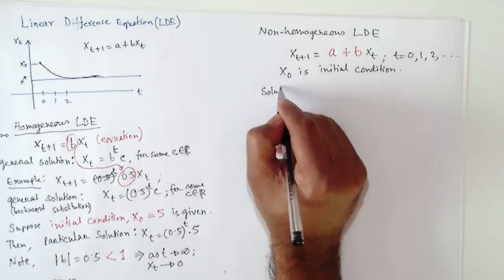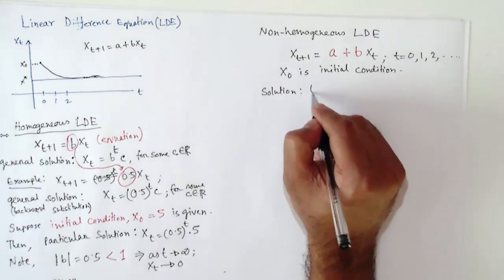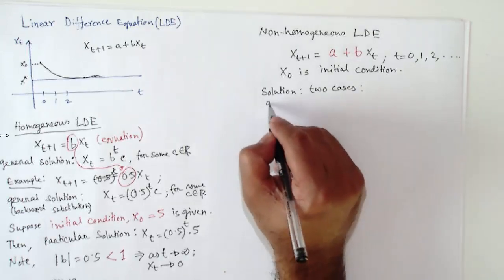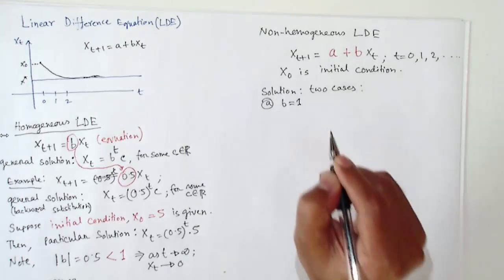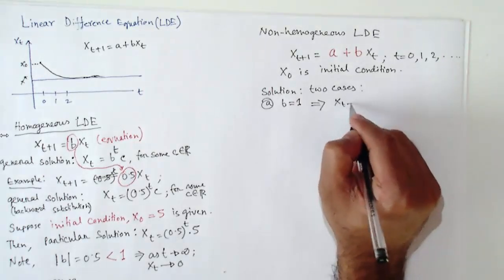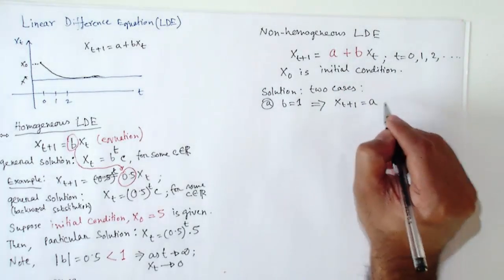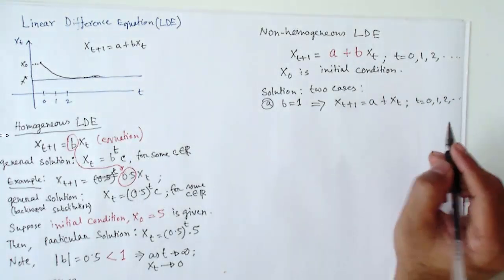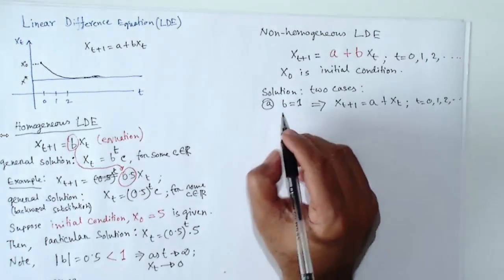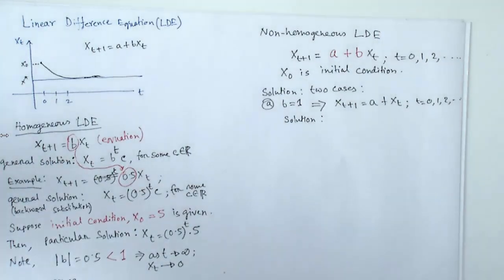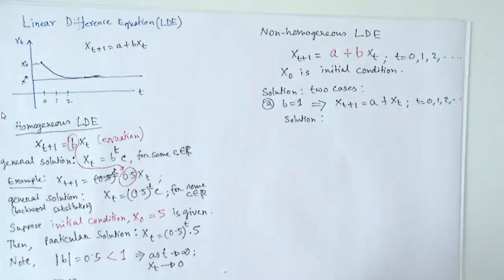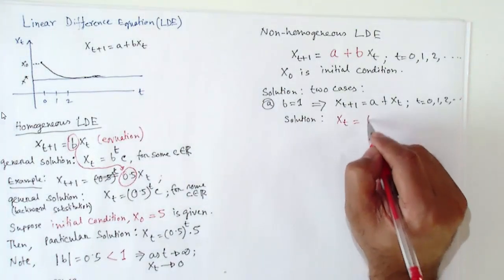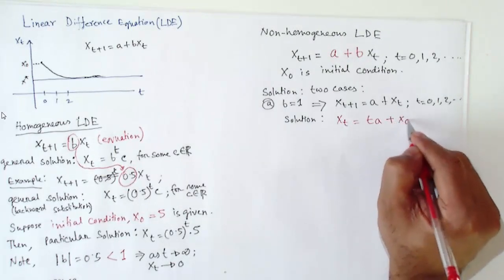There are two cases. First, suppose b equals 1. The equation simply becomes x_{t+1} equals a plus x_t, for t equals 0, 1, 2. By backward substitution, the solution is x_t equals t times a plus x_0, where x_0 is the initial value.